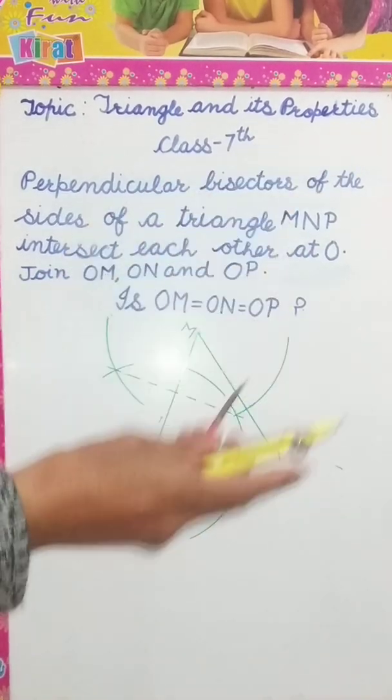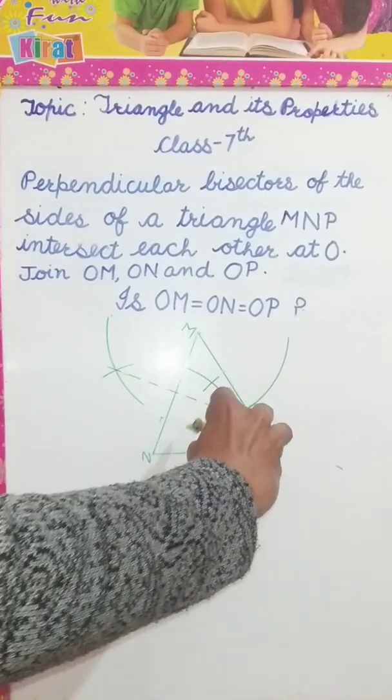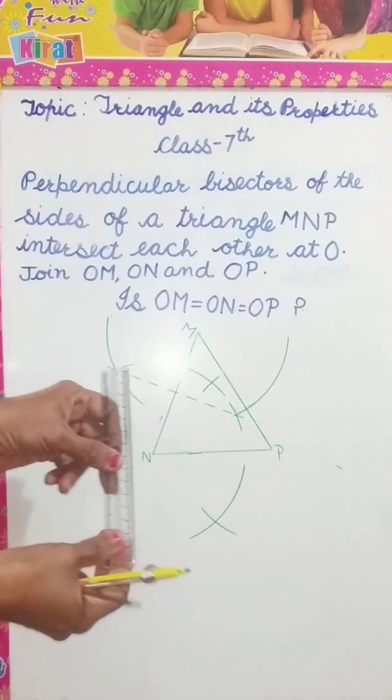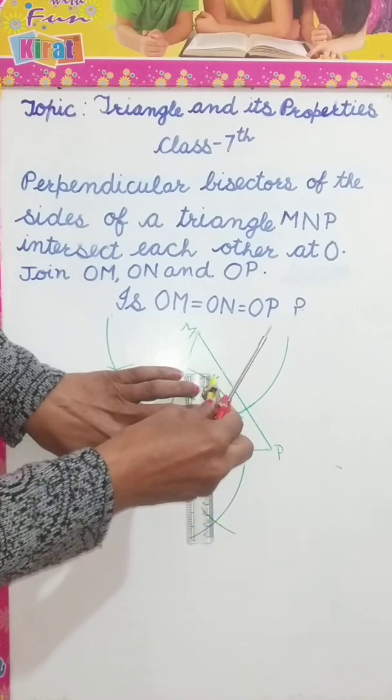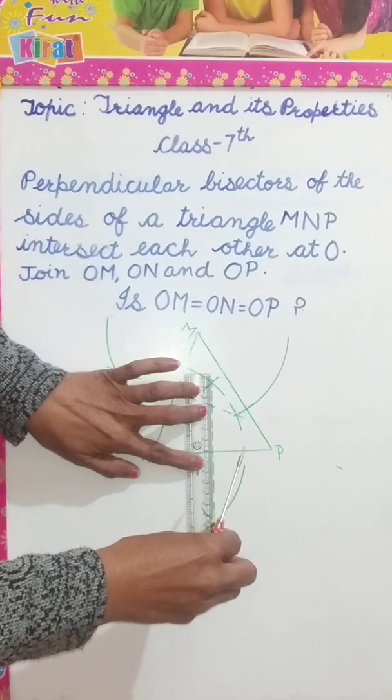This way. Now, taking P as a center, now join the intersecting points with the dotted lines.